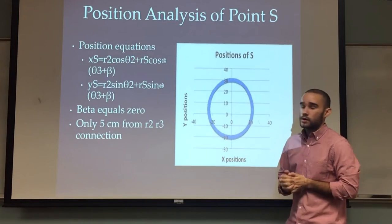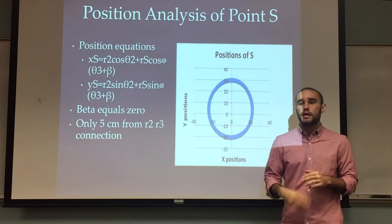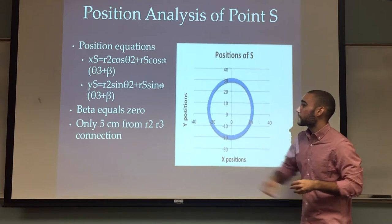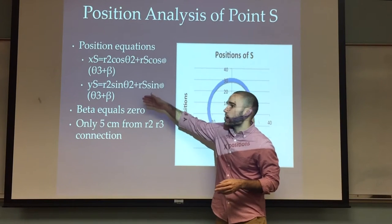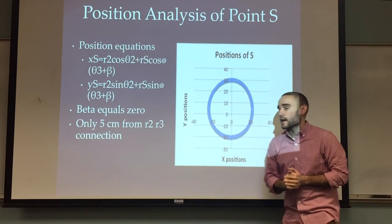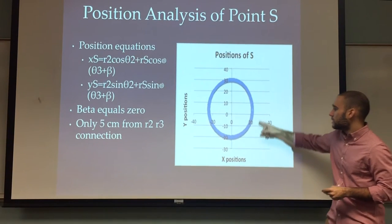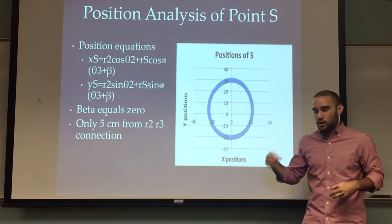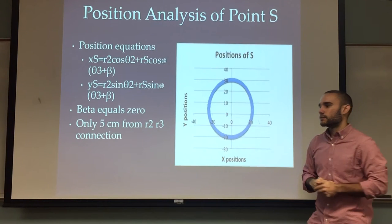Our S is a bar, a link attached to our coupler, and in our case beta would be zero so it was lying on our coupler. These would be the equations for x and y position of the point S. And as you can see here, point S does a circle that's very similar to the end of link 2 and the beginning of link 3.